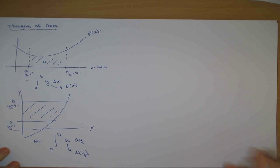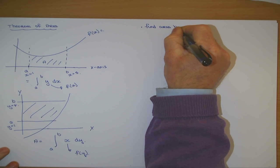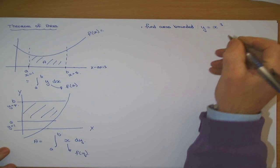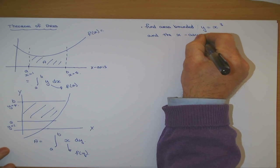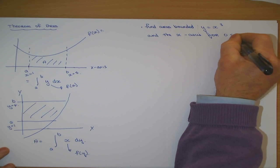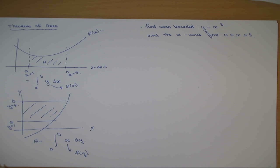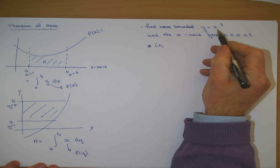Find the area bounded by the curve y equals x cubed and the x-axis from 0 to x equals 3. Now the first thing I'd ask you to do with all of these curves is to sketch it. You don't have to sketch the whole curve. But what does y equals x cubed look like? I could get a set of points. When x is 0, what would y be?